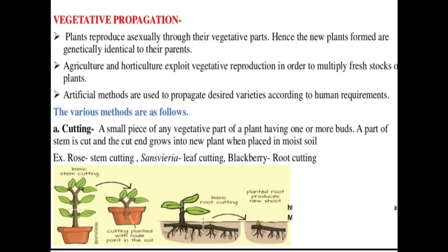Today we study about asexual reproduction in higher plants, which is known as vegetative propagation or vegetative reproduction. In vegetative reproduction, the plants reproduce asexually through their vegetative parts. The vegetative parts include roots, stems, and leaves. Vegetative reproduction is used to promote plant growth.